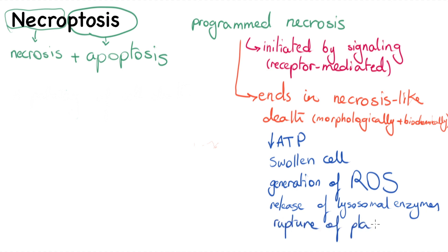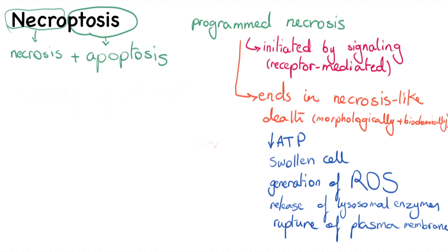Ultimately we have rupture of the plasma membrane. The key difference with necrosis is that necroptosis is initiated via external signaling, very similar to the extrinsic or receptor-mediated pathway of apoptosis.